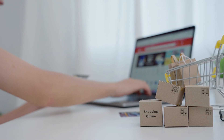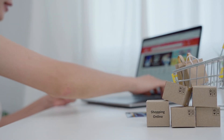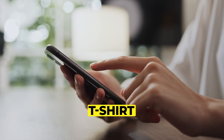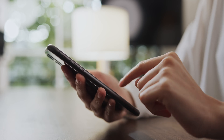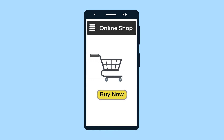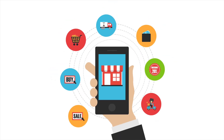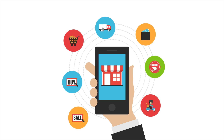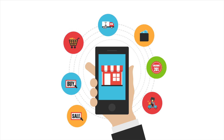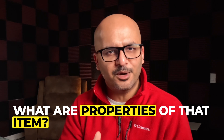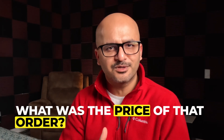Imagine you are placing an online order on an online store. You could place an order like a smartphone, or you could place an order like a T-shirt. Both these orders get stored in the system where you are placing the order — for example, Amazon. The data stored includes the order number, your name, address, phone number, what item you ordered, the properties of that item, the price, and the payment details.